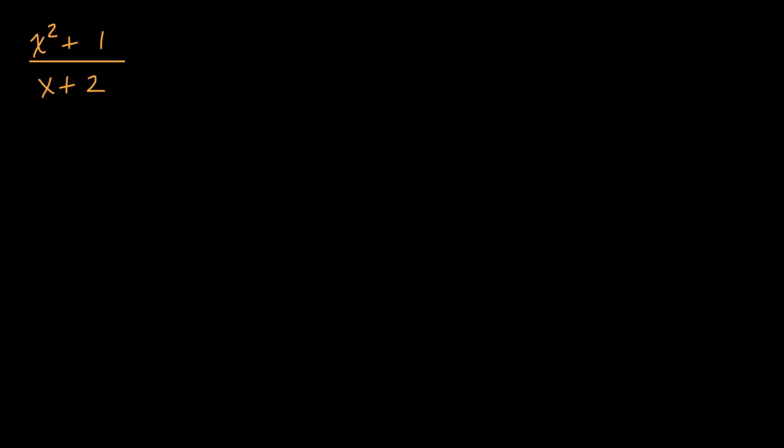And the best thing that I could think of is constructing a difference of squares using x plus two. So we know that x plus two times x minus two is equal to x squared minus four. So what if we were to write x squared minus four up here, and then we would just have to add five to get to plus one.